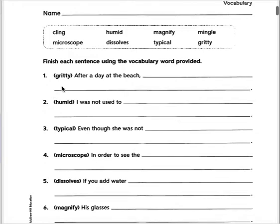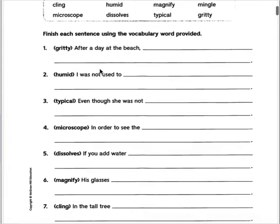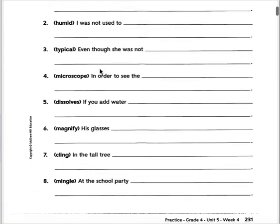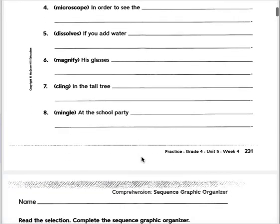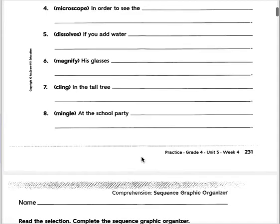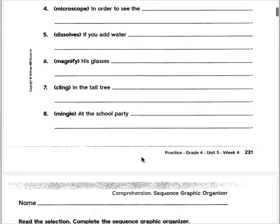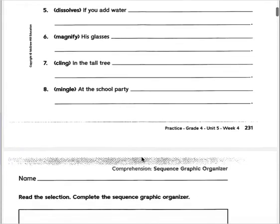So finish each sentence using the vocabulary word provided. This is review, just new words. Remember I taught you how to open dictionary.com as well. So if you need help with understanding or need the definition, use synonyms to help you better clarify meanings as well.